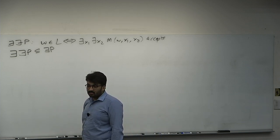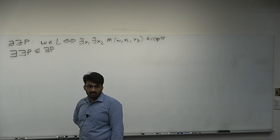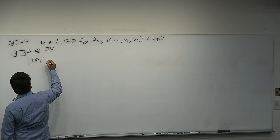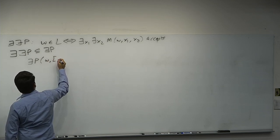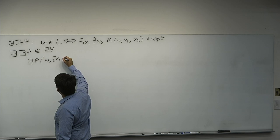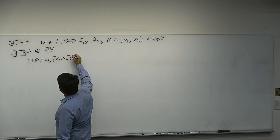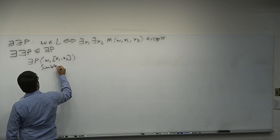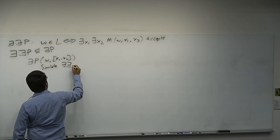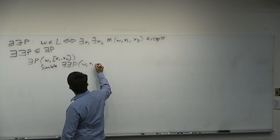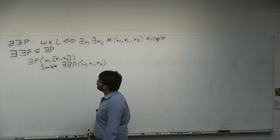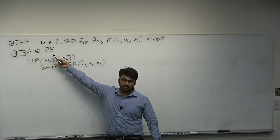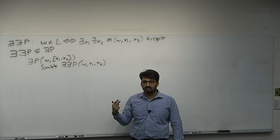For the first direction: given an Exist-Exist-P machine, we construct an Exist-P machine whose witness is just a concatenation of both witnesses — some encoding of X1 and X2. The Exist-P machine simulates the Exist-Exist machine on W, X1, X2.